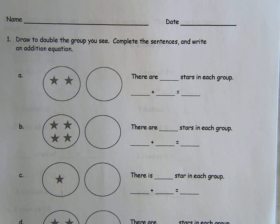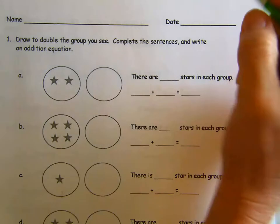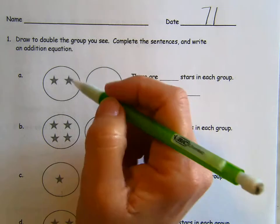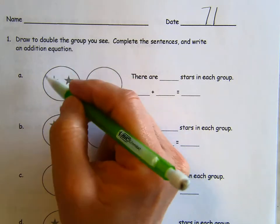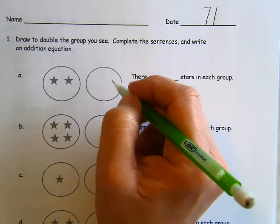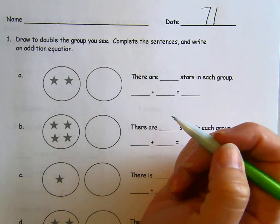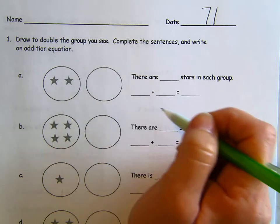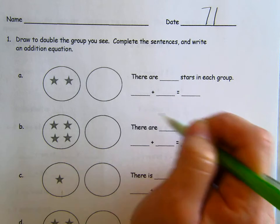Hi, everybody. This is Lesson 17 Homework. We're in the Succeed book, page 71, and this is just like our problem set today. We are going to be practicing our doubles.